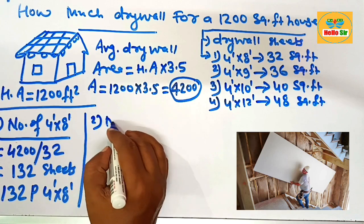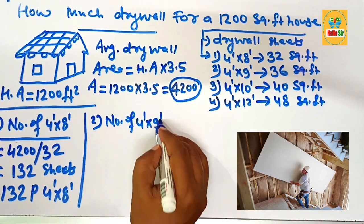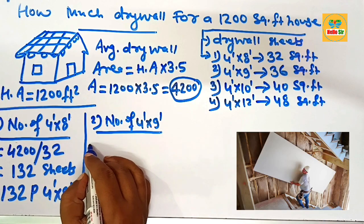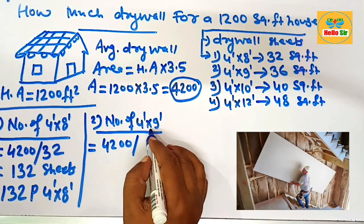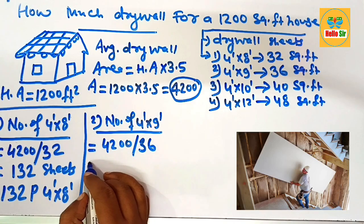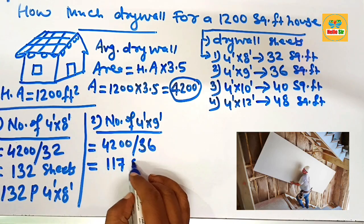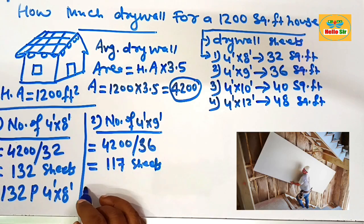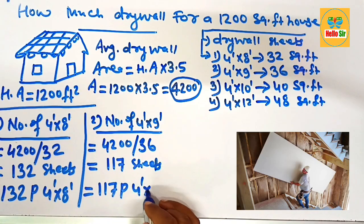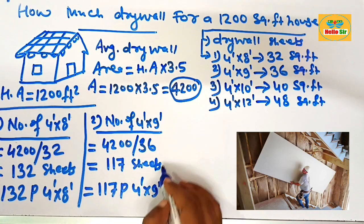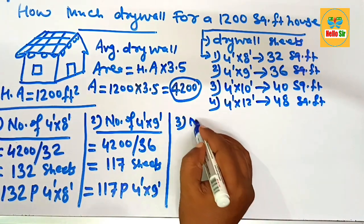Now calculate the number of 4 by 9 drywall sheets. Using a similar method, divide the total area of 4200 by the area of one piece, which is 36. After division, this comes to about 117 sheets. You need approximately 117 pieces of 4 by 9 drywall sheet to cover that area.